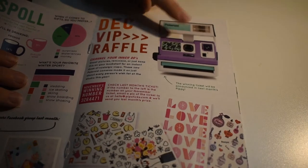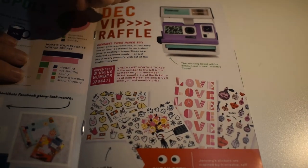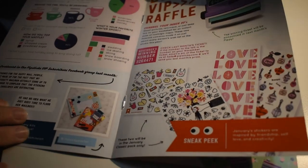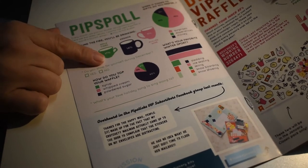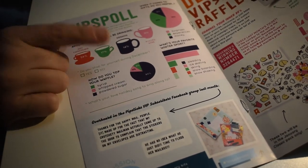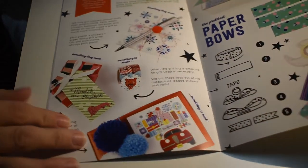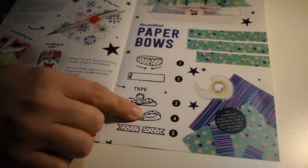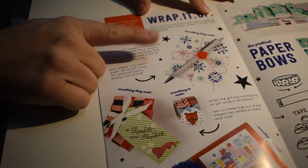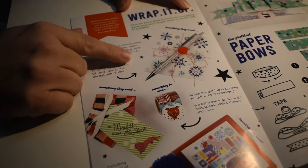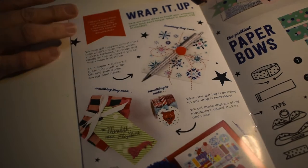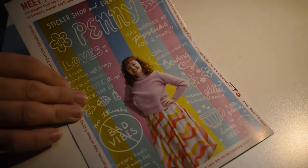Next month you could win this Polaroid camera. I've got to find out if my ticket was the winner from last month. They take some polls online so they show the results about that. And they tell you how to make fun things like paper bows and different ways to wrap up some gifts for your loved ones at Christmas and year round. That's fun to look at. Let's get started with my favorite part.